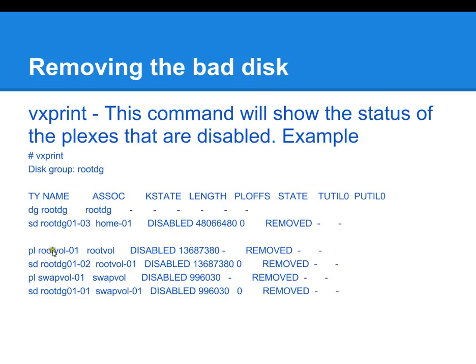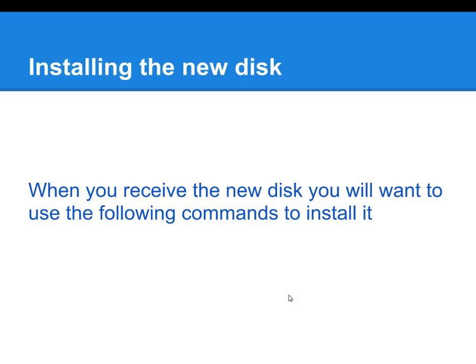All the volumes and plexes associated with that disk have been removed as well. So rootFile01 is gone, swapFile01 is gone, as well as rootDG01 has been removed. At this point, hopefully your hot spare has kicked in if you had one. If you didn't have one, your system is now running on one disk and it is vulnerable.